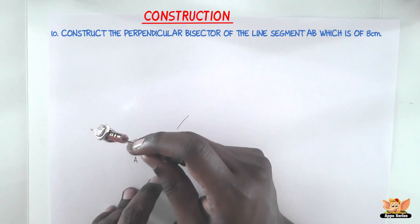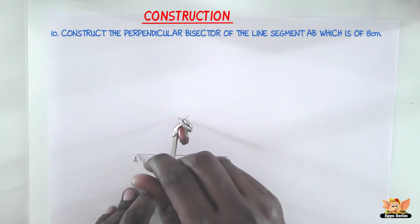Similarly, with A as center and with the same radius that you took from B, cut the arcs that we drew earlier.